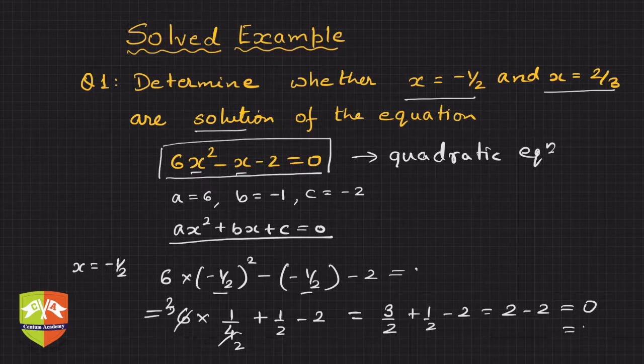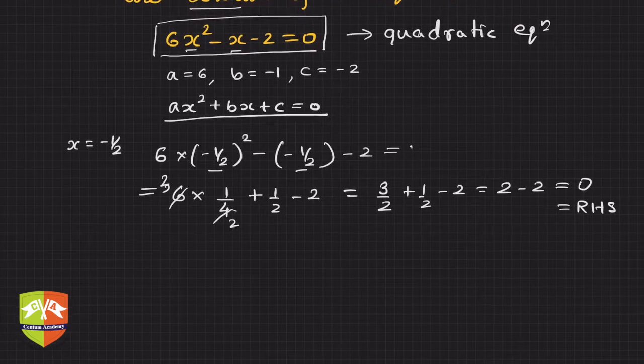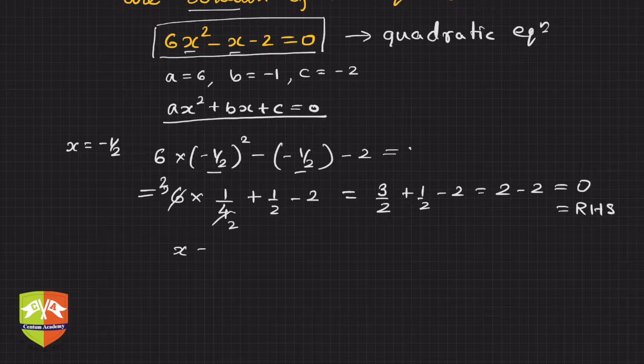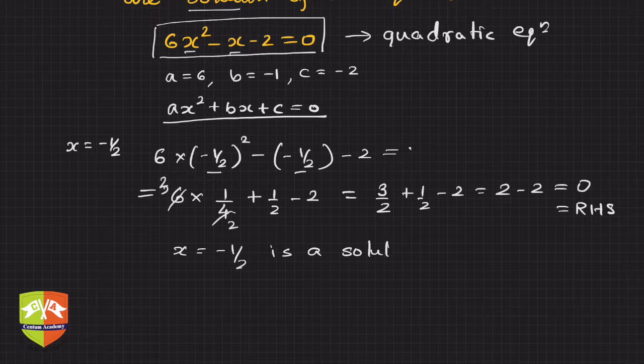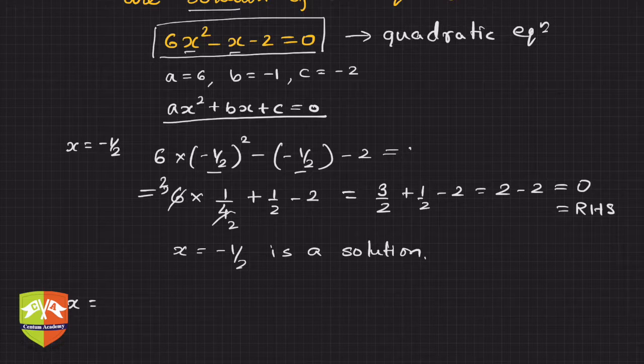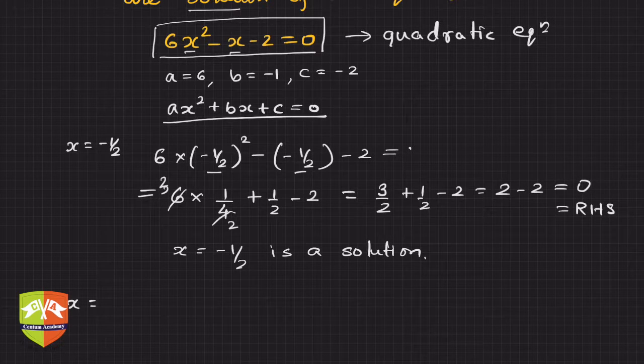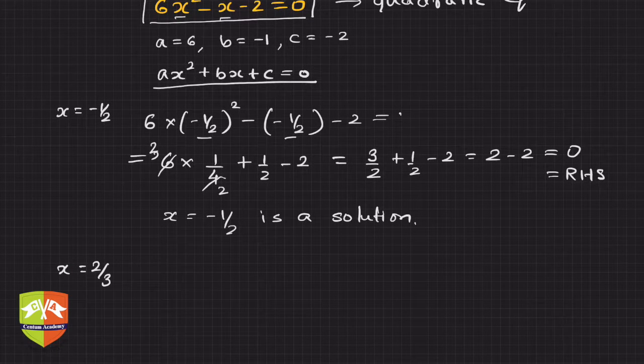That means we can declare that x = -1/2 is a solution to the given quadratic equation. Similarly, when x = 2/3, let's check the next value.